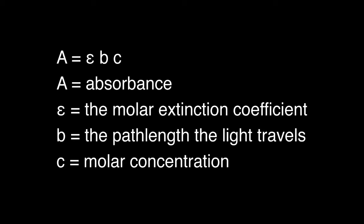A equals epsilon B C, where A equals the absorbance, epsilon equals the molar extinction coefficient, B equals the path length the light travels, and C equals the molar concentration. Because the path length does not change, our only variable will be the concentration.